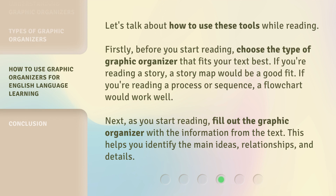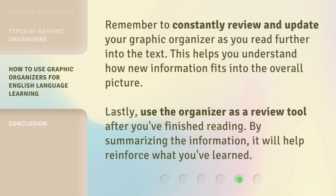Let's talk about how to use these tools while reading. Firstly, before you start reading, choose the type of graphic organizer that fits your text best. If you're reading a story, a story map would be a good fit. If you're reading a process or sequence, a flow chart would work well. Next, as you start reading, fill out the graphic organizer with the information from the text — this helps you identify the main ideas, relationships, and details. Remember to constantly review and update your graphic organizer as you read further into the text, as this helps you understand how new information fits into the overall picture. Lastly, use the organizer as a review tool after you've finished reading — by summarizing the information, it will help reinforce what you've learned.